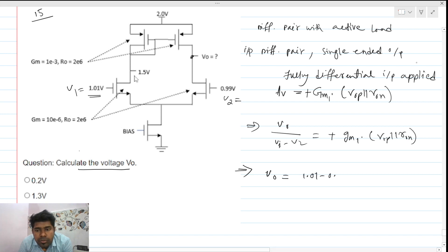So v out will be 1.01 minus 0.99 times gm1. This is our M1, this is M2, and M3 and M4, you know that. These two are symmetrical and these two are the same. So gm1 is 10 times e power minus 6, which is 10 times 10 power minus 6.